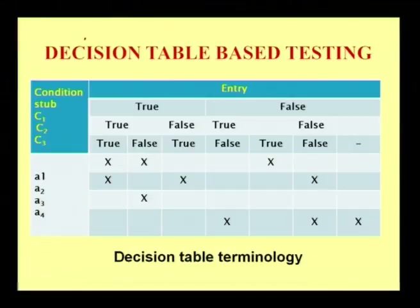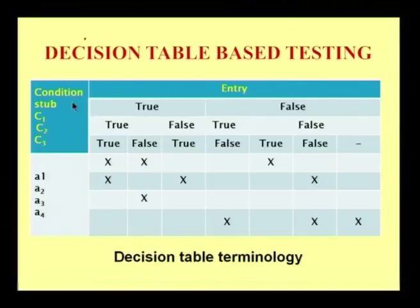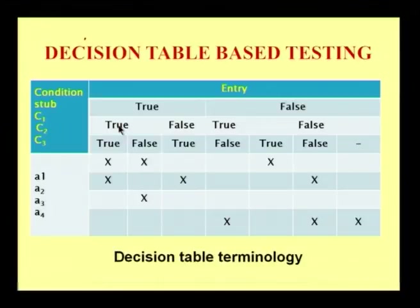Consider this as an example of a decision table based testing where initially we will have a condition stub, an action stub, and some entries. These three are the major deciding blocks for a decision table based testing. In the condition stub I will be giving different conditions C1, C2, C3, which majorly come under a class of either true or false. Likewise for C2, within a class of true I will have true or false, and within a class of false I will have true or false, and similarly for C3.